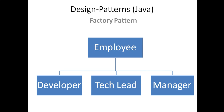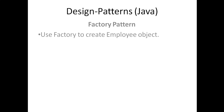Let us understand this with an example. Say you have employees in a company — a developer is also an employee, a tech lead is also an employee, a manager is also an employee, but they all have different roles and responsibilities. Factory says: use the factory to create employee objects; do not create them by calling the new operator, because there could be a lot of logic behind creating those objects.